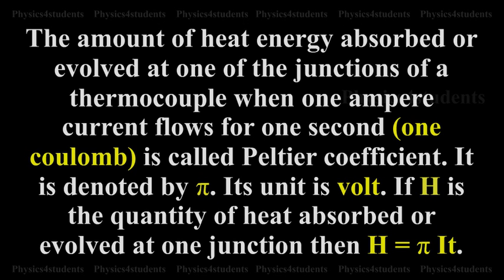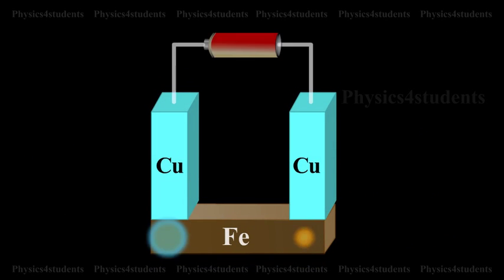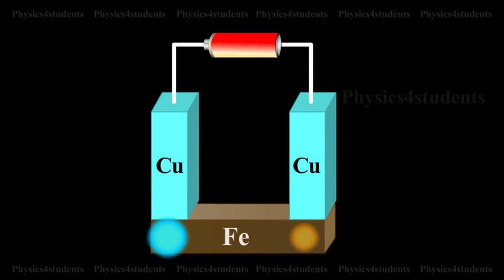If H is the quantity of heat absorbed or evolved at one junction, then H is equal to Pi into I into T. The Peltier Coefficient at the junction is the Peltier EMF at that junction. The Peltier Coefficient depends on the pair of metals in contact and the temperature of the junction.